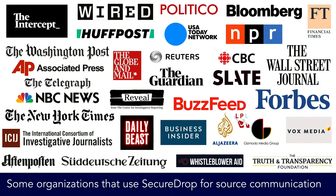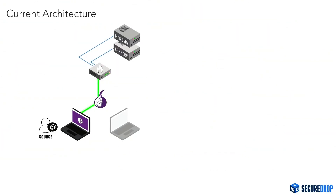First, I'm going to recap how SecureDrop presently handles these three goals. SecureDrop is a whistleblowing platform currently used by many news organizations for source-journalist communications. Each installation is on-prem and consists of two servers at each news organization. One server is the application server — it runs two web apps, one that sources use and one that journalists use, and both are available only as Tor onion services, meaning they're available only via the Tor anonymity network.